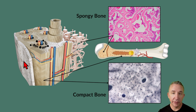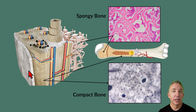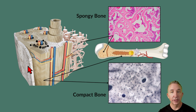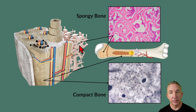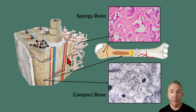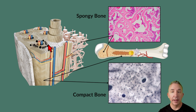Looking at the outer cover — that dense fibrous connective tissue is the periosteum, so this is the outside of the bone. Moving inward, we're looking at compact bone. Once it gets to where it has more of the appearance of a sponge, this is spongy bone. Let's first look at compact bone.